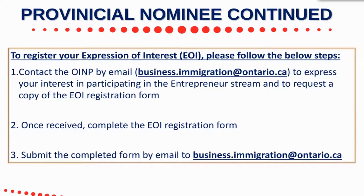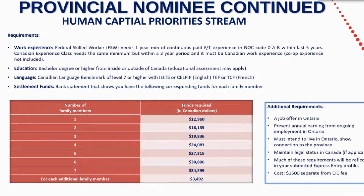Another popular stream is the Human Capital Priorities stream. This doesn't give you as much control over being selected because you must first be entered into Express Entry. You have to be a skilled worker, federal skilled worker, or part of the Canadian Experience Class. For federal skilled workers, your NOC code must be 0, A, or B — examples include managerial, financial industry, or administrative positions. The NOC code also applies under the Canadian Experience Class, meaning you have experience working in Canada in those fields.